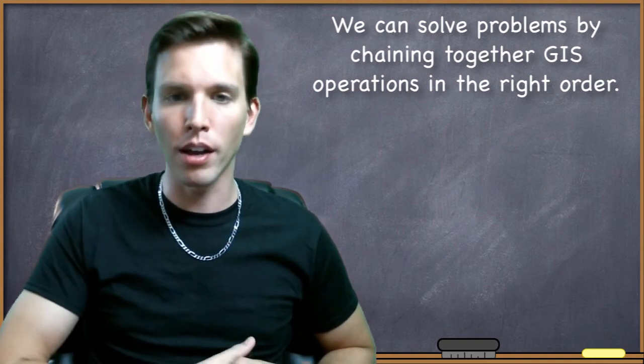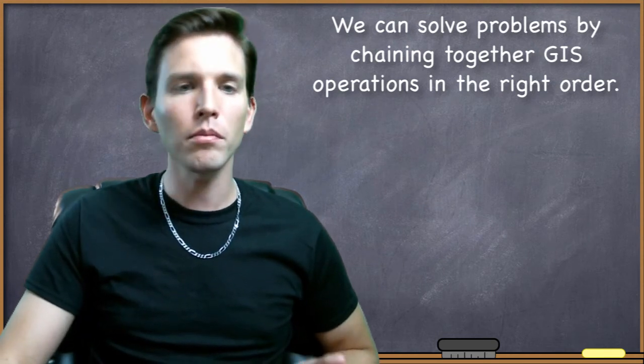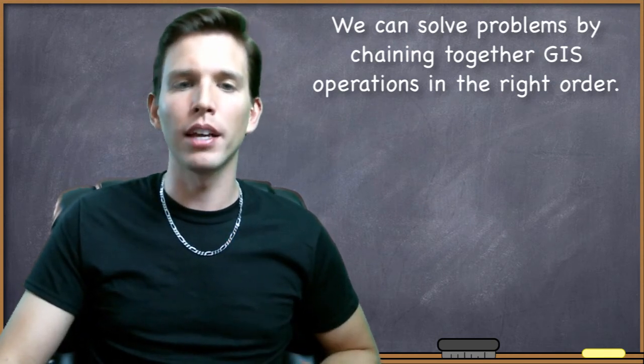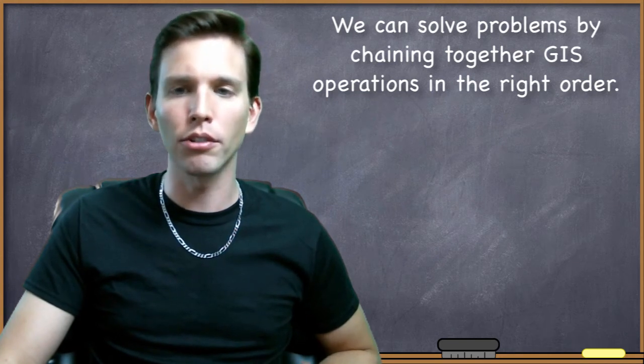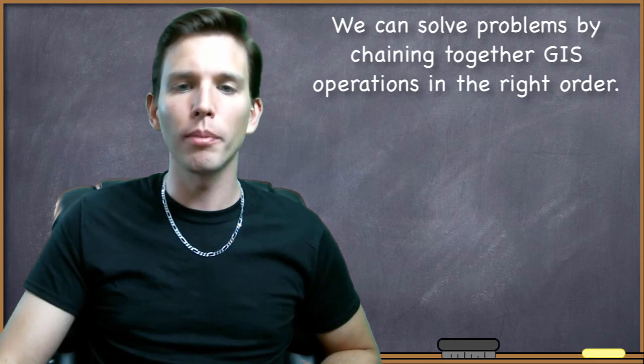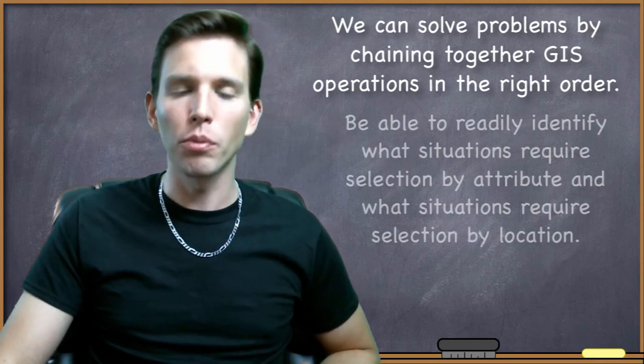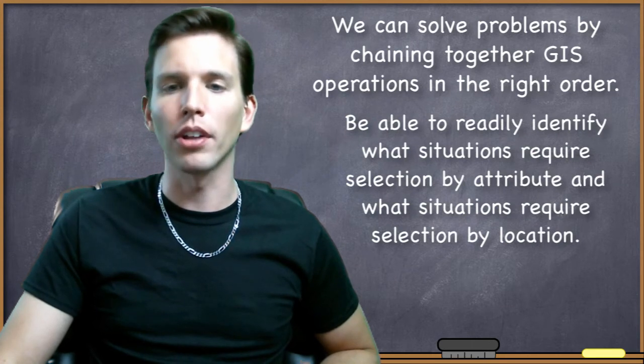And that brings me to my final points that I want to make in this video regarding these selections. One of the most fundamental things that you should be able to do in vector GIS analysis is to be able to identify when the information that you need can be obtained through a selection by attribute and when the information can be obtained by a selection by location.